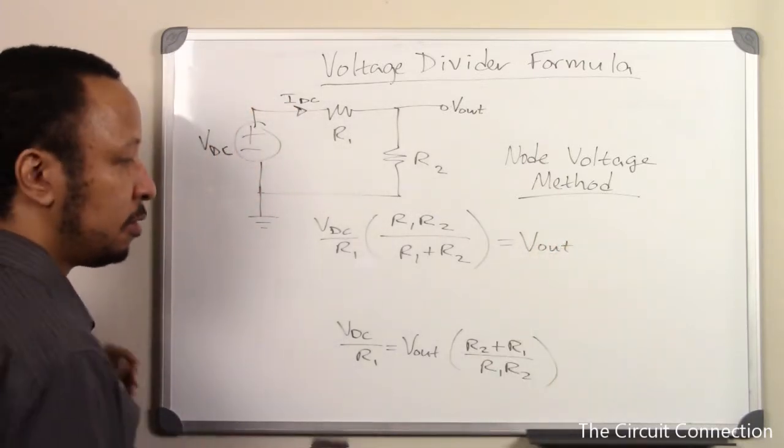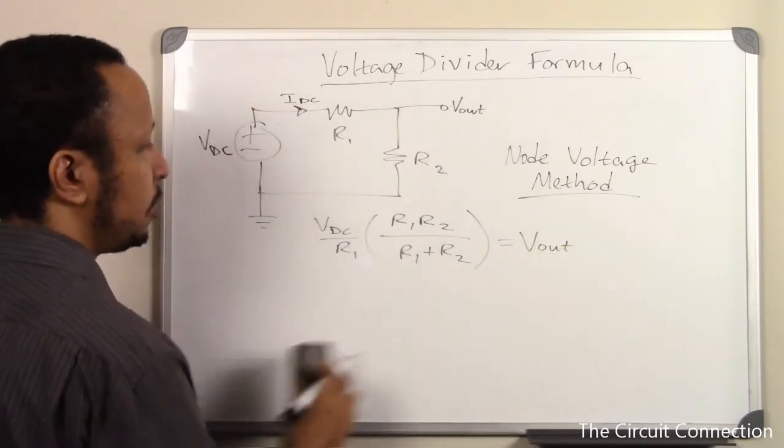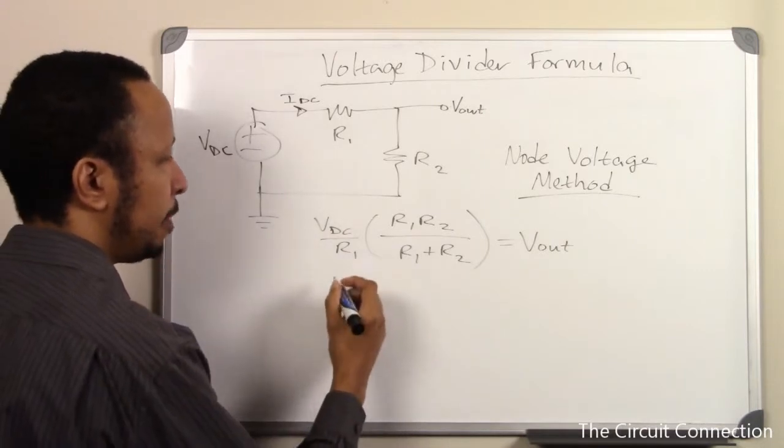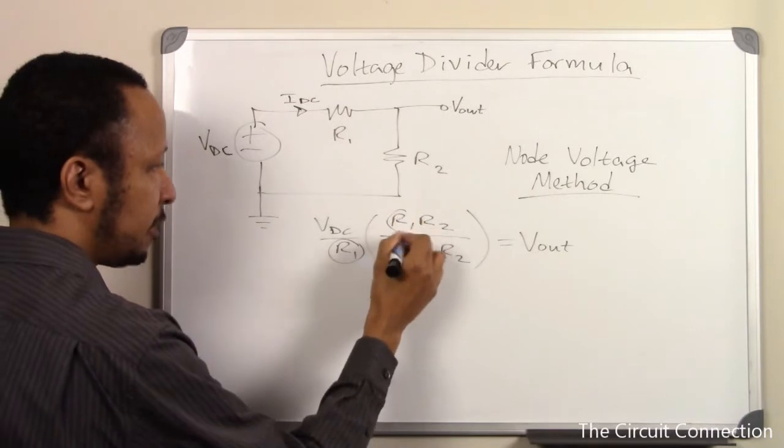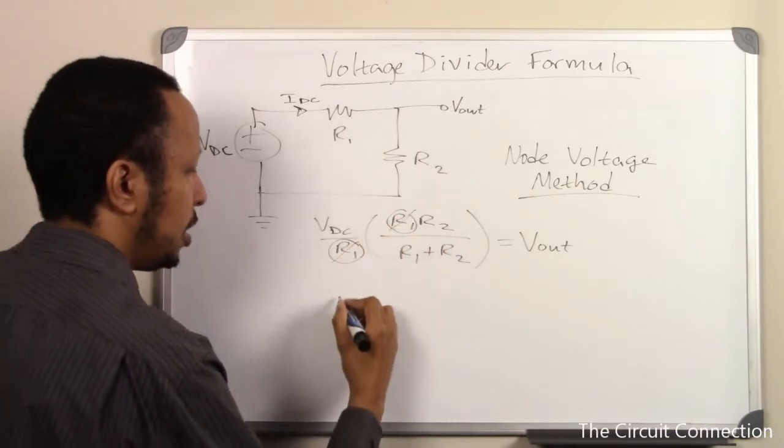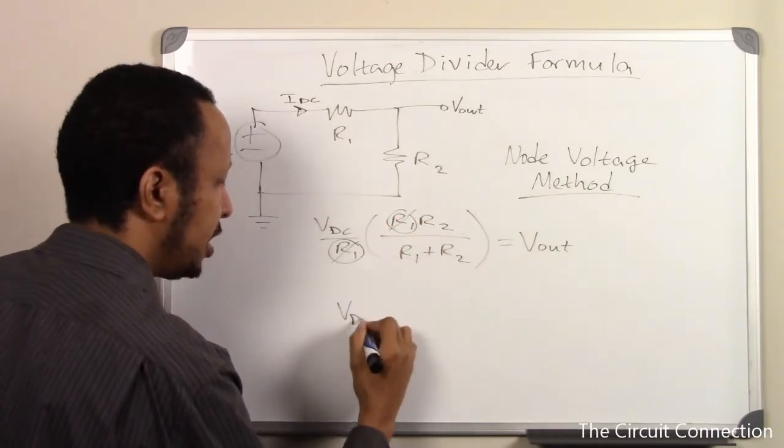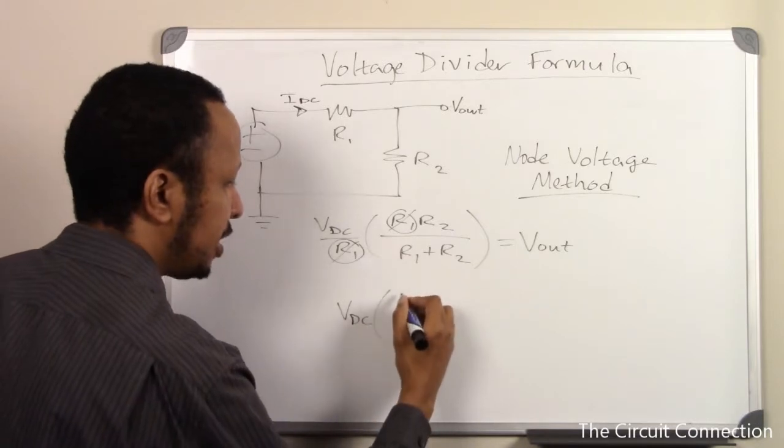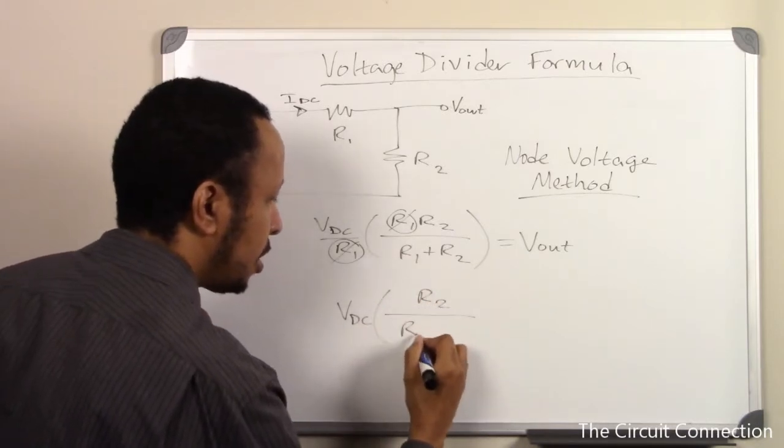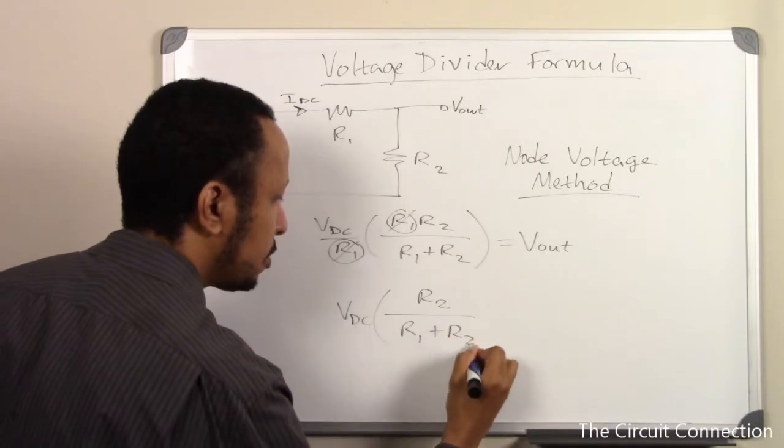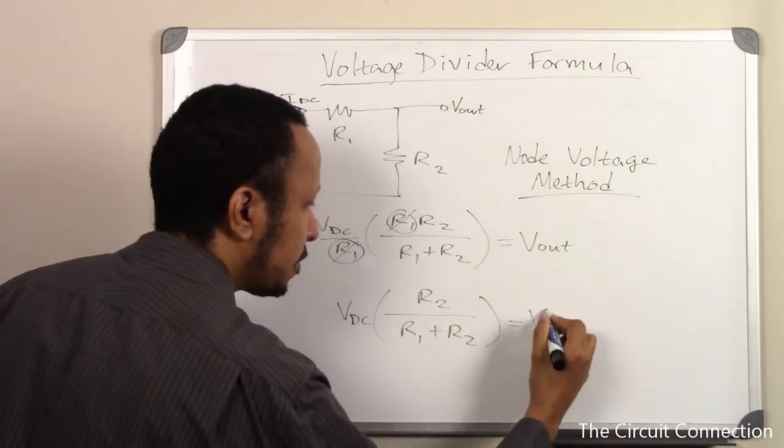Now all we're going to do from this step forward is to simplify. So we can see that our R1's here cancel out, and so we are left with VDC times R2 over R1 plus R2 equals Vout.